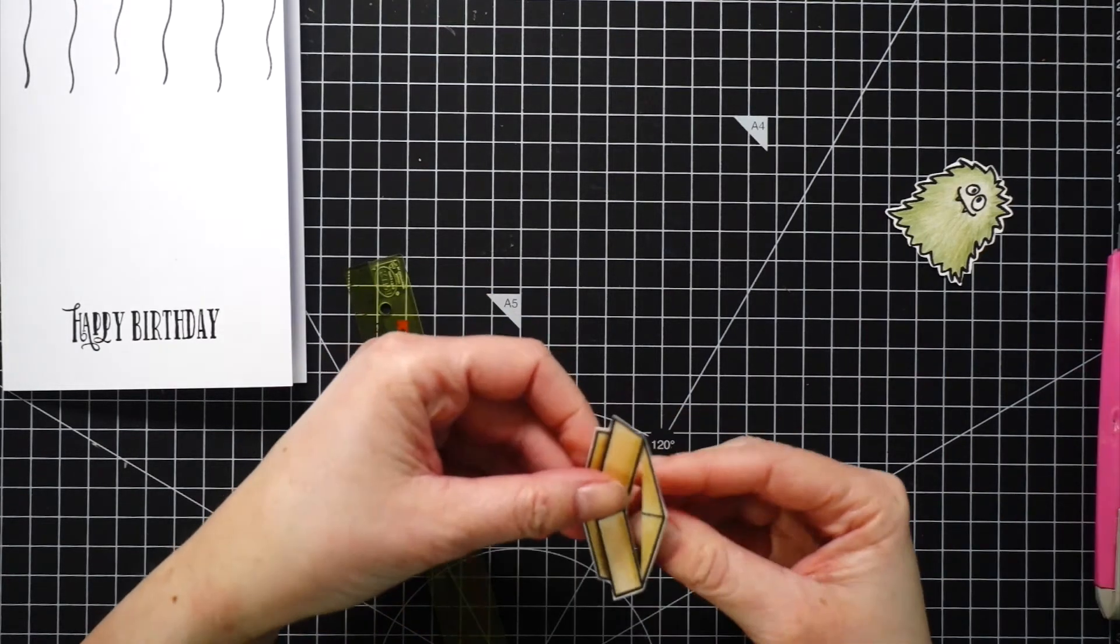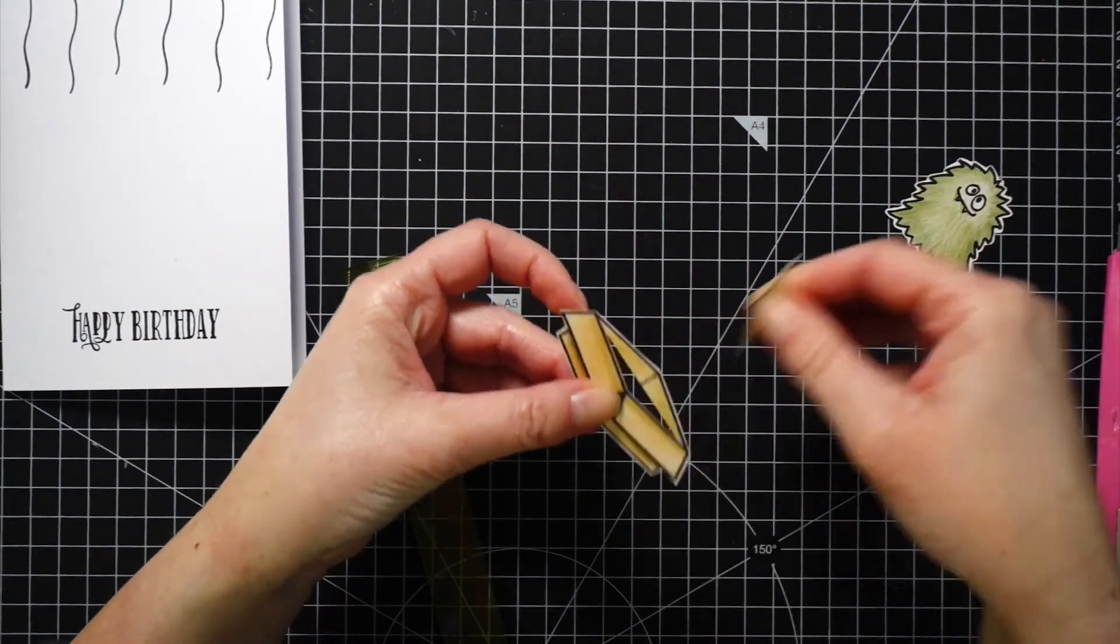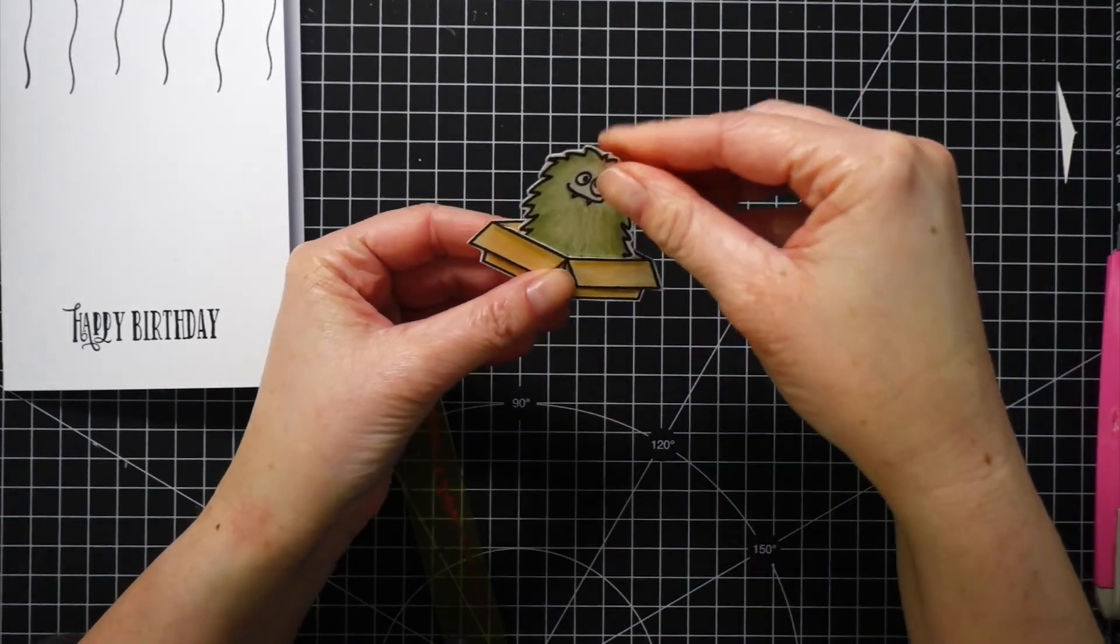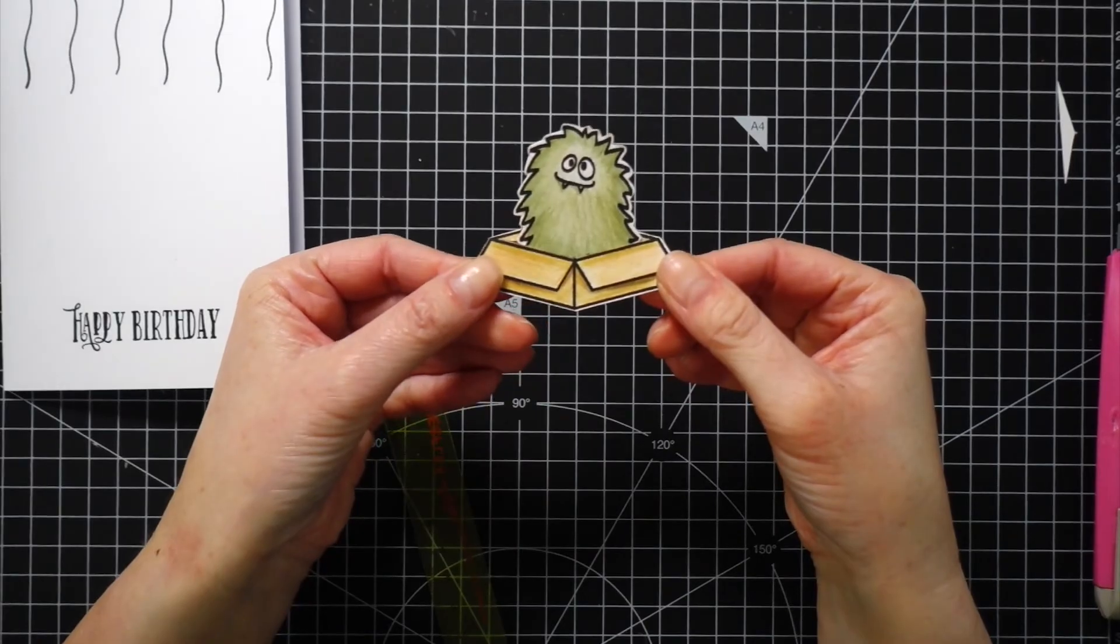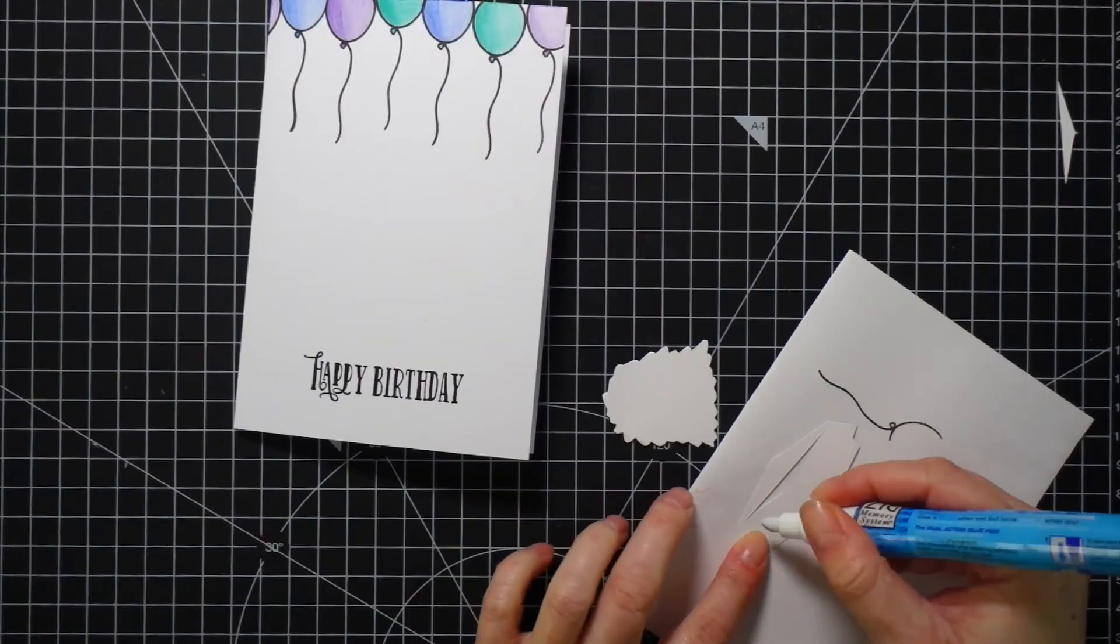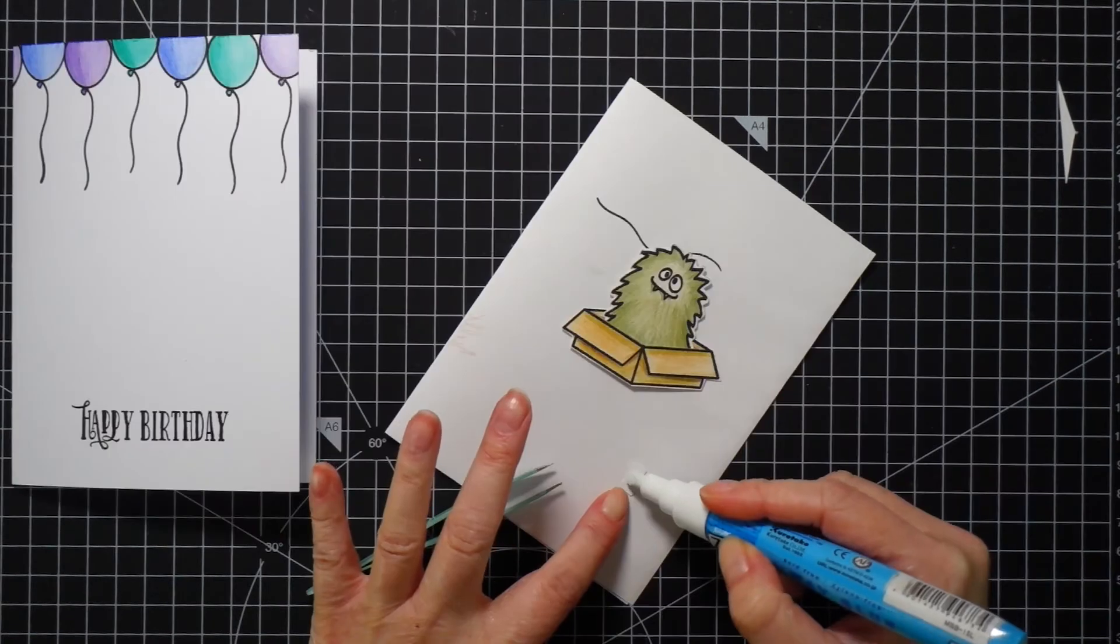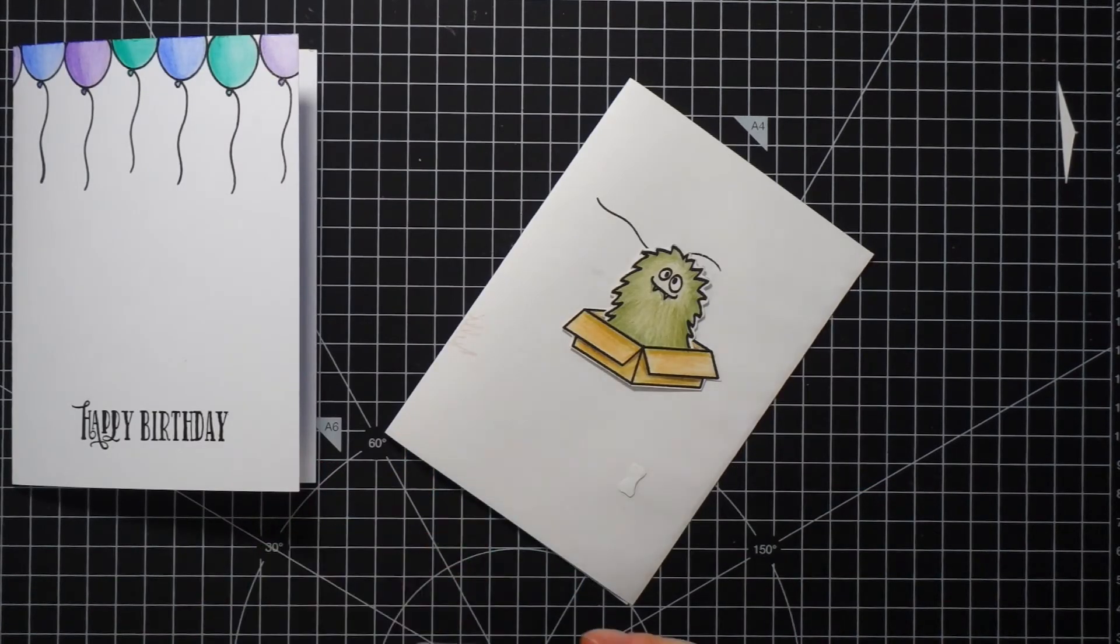You could also mask the images when stamping and this way you would not need to be using a crafting knife. I tucked the monster inside of the box and I glued the monster and the box together. I probably didn't need to do that because I will be using a foam tape as well.